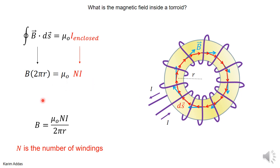So if you rearrange terms you get B is μ₀NI over 2πR, where N is the number of windings around the toroid.